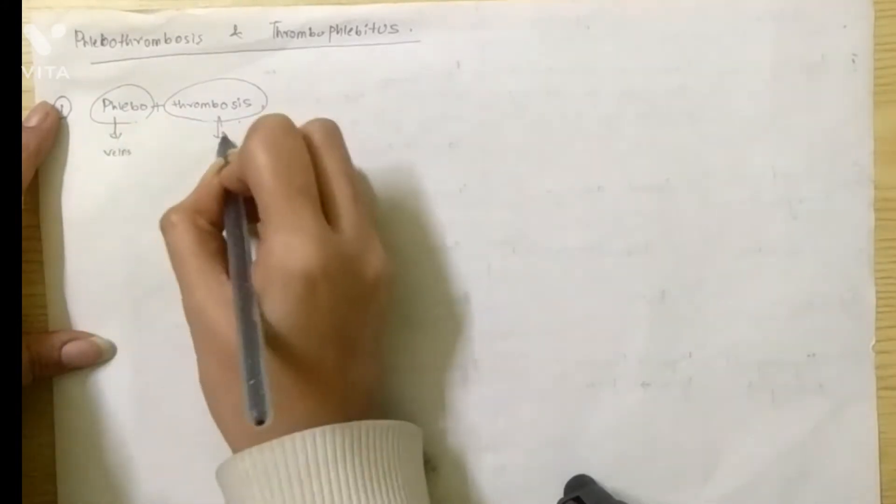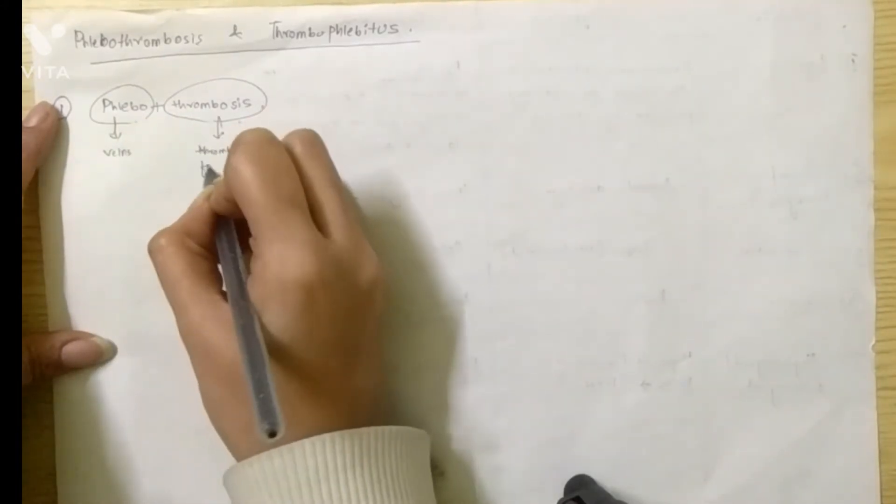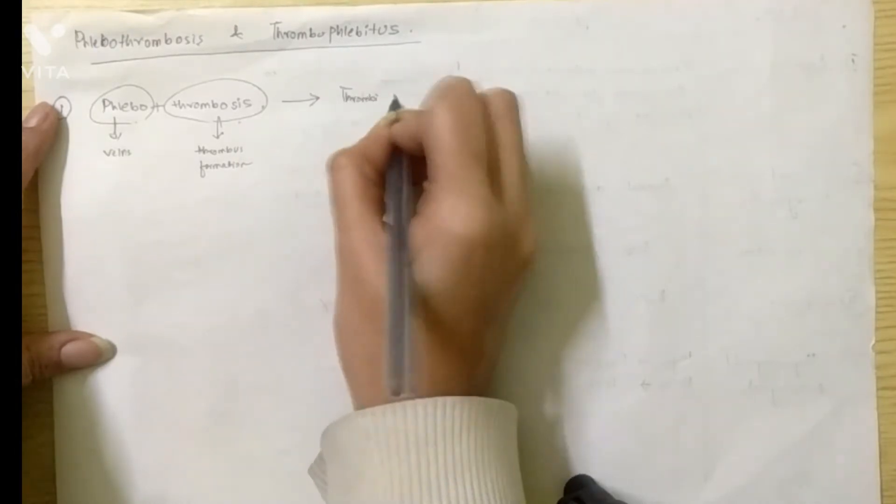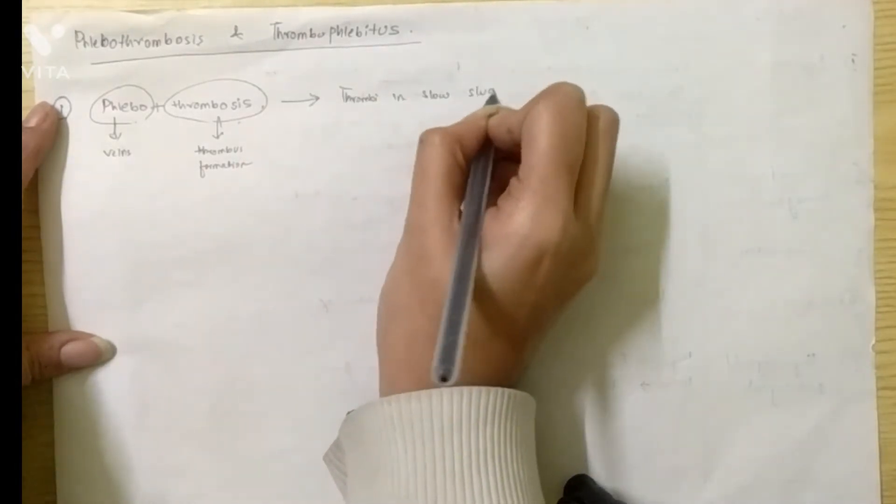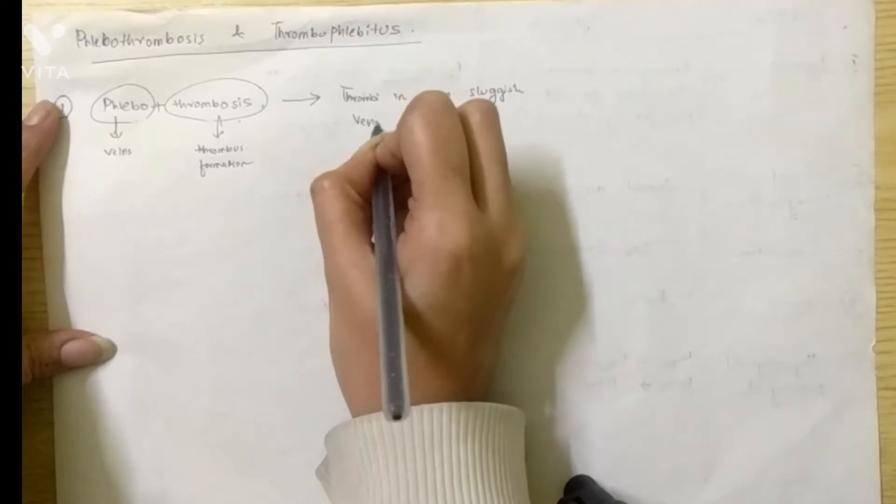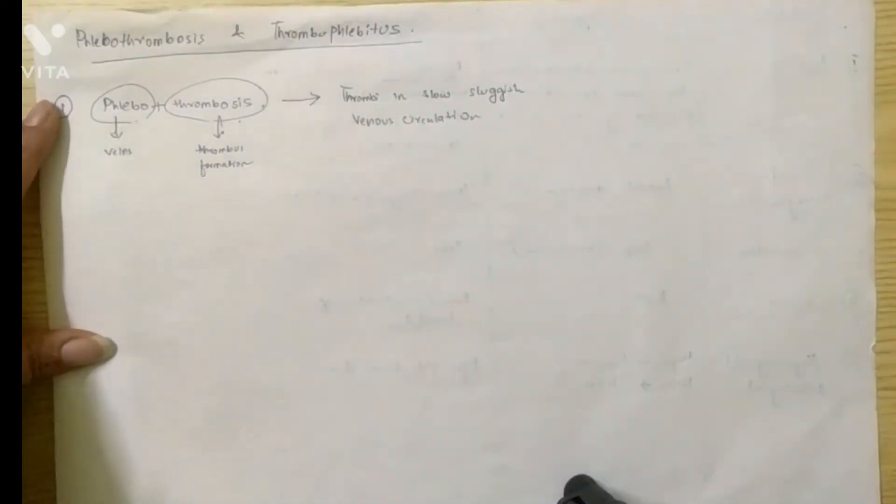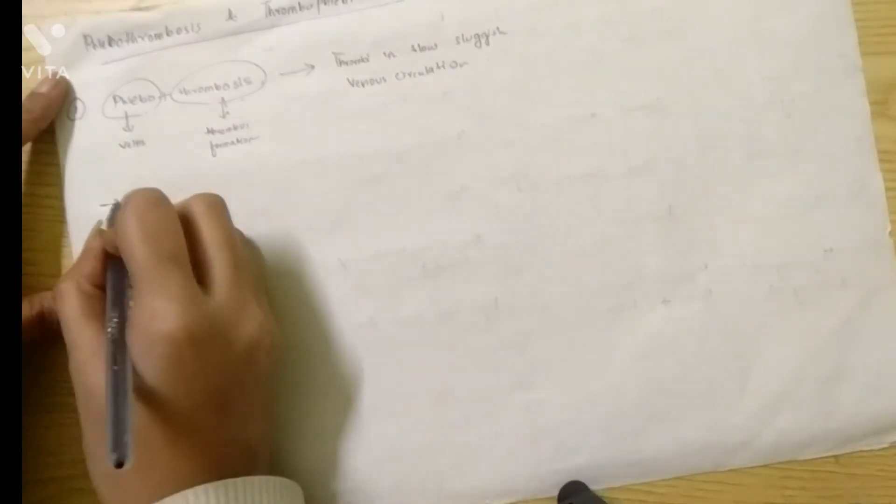Now break this into two terms: one is phlebo and one is thrombosis. Phlebo means veins and thrombosis means thrombus formation. So as the term says, it means thrombi in slow, sluggish venous circulation. There is formation of thrombi in slow, sluggish venous circulation. Now there are some points which have to be remembered regarding phlebothrombosis.